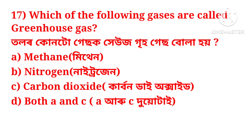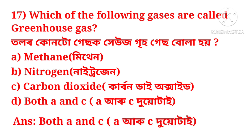Which of the following gases are called greenhouse gases? The options are: methane, nitrogen, carbon dioxide, or all of the above. The correct answer is both methane and carbon dioxide — all of the above.